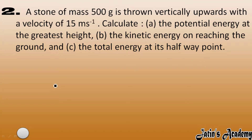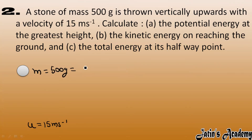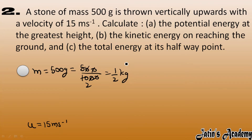A ball is thrown vertically upward with an initial velocity of 15 meters per second and a mass of 500 grams. Let's convert it into kilograms by dividing by 1000, so we get 1/2 kilogram.